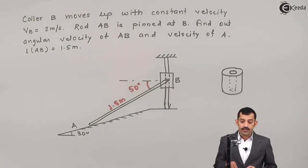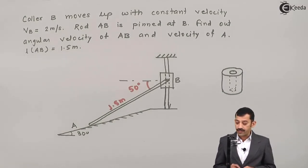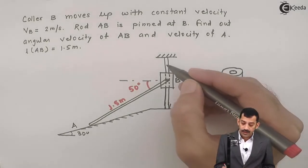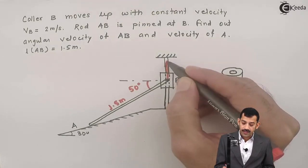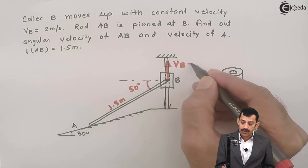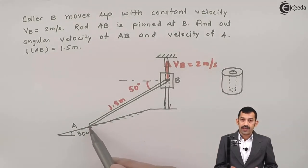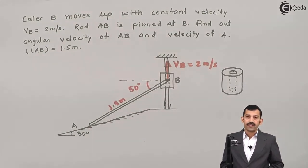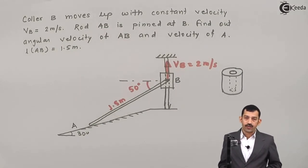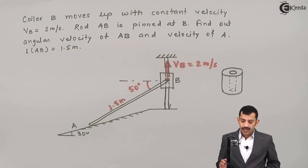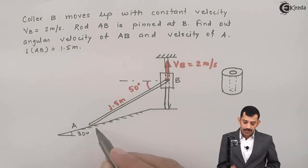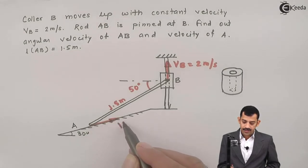In the problem, collar B moves upward with a constant velocity of 2 meters per second, so VB equals 2 meters per second upward. The other end of the rod is on an inclined plane, so end A's motion is restricted — it has to slide along the plane only. As collar B moves vertically upward, end A slides along the plane in the upward direction, so this is the direction of VA.